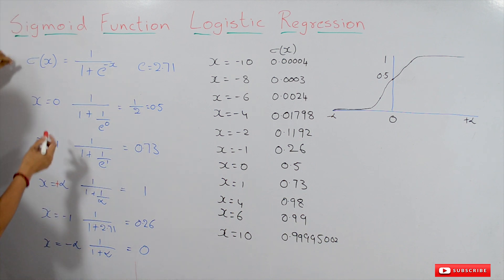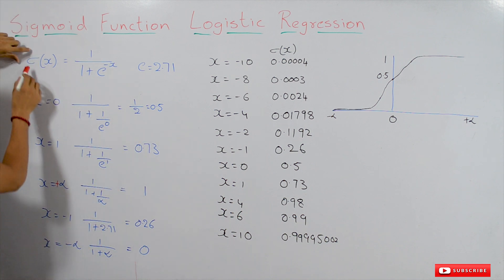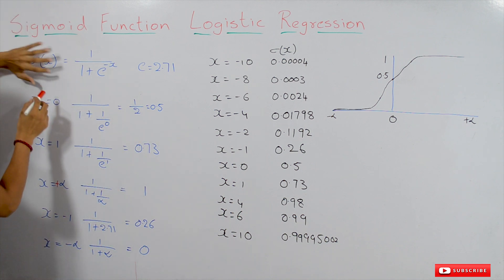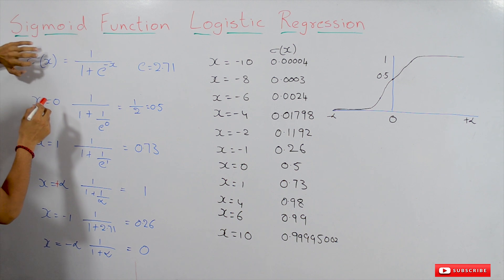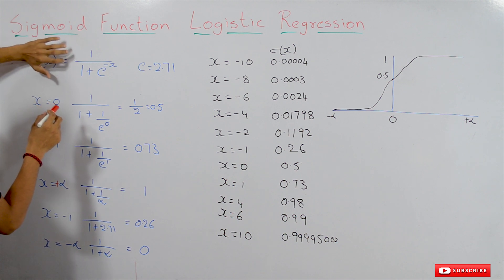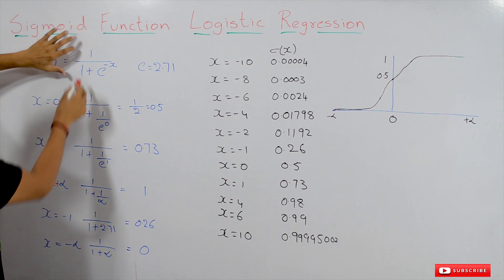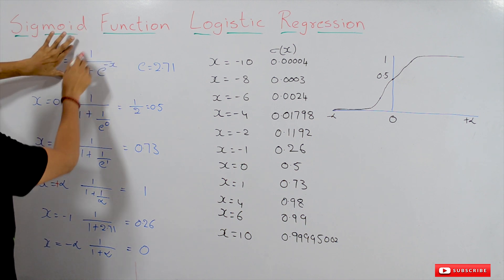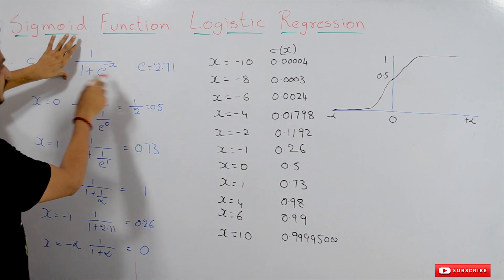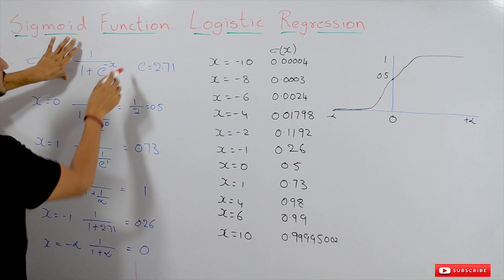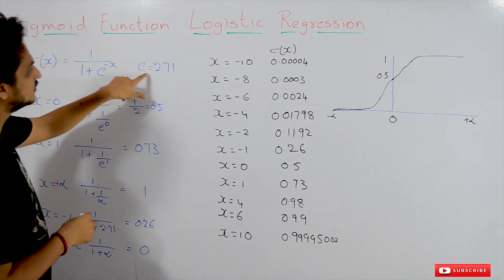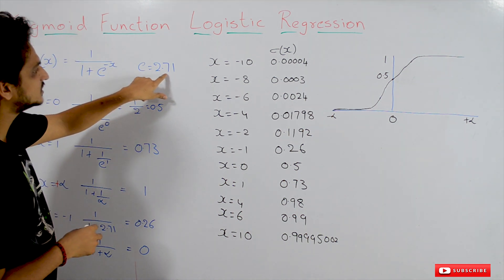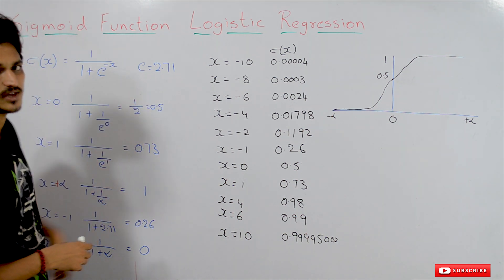The sigmoid function is given like this. Sigma of x — this is the symbol for the sigmoid function. Sigma of x is equal to 1 divided by 1 plus e to the power minus x. We know the value of e is equal to 2.71.